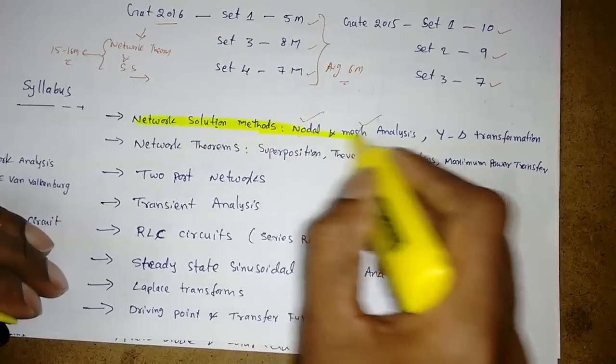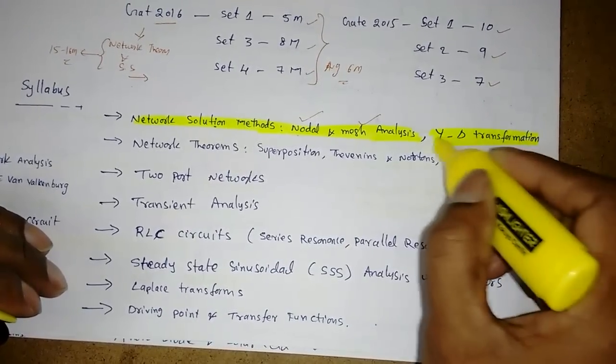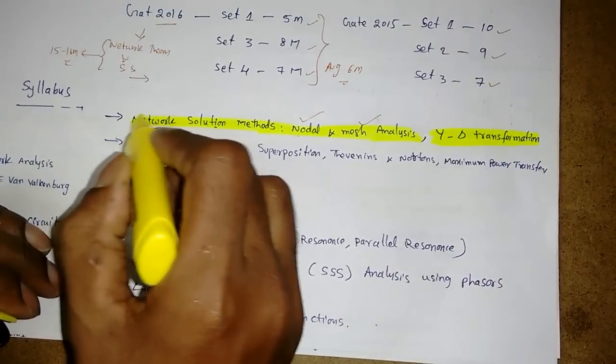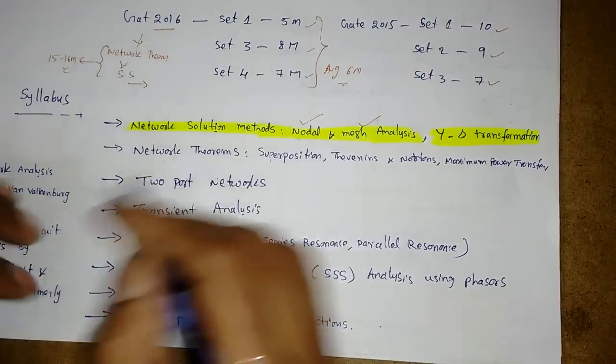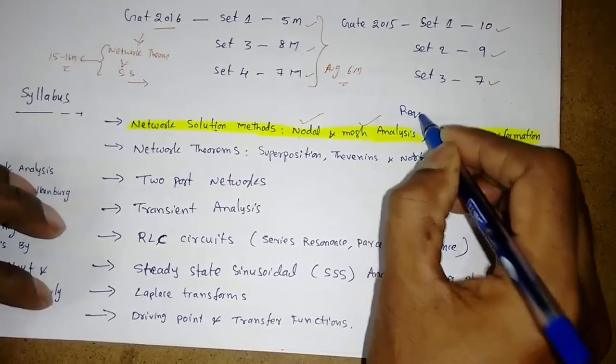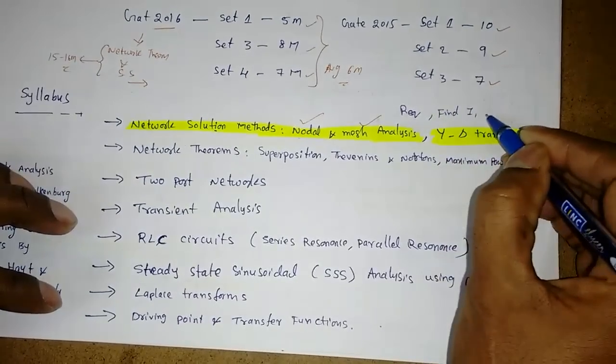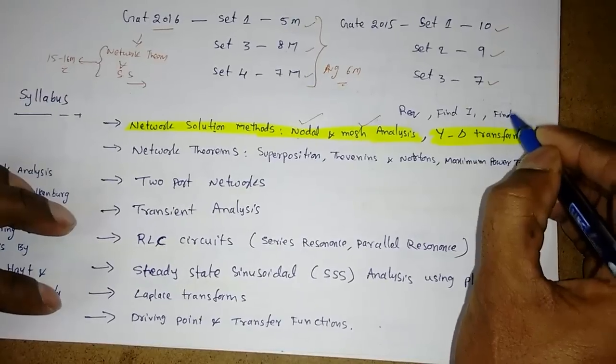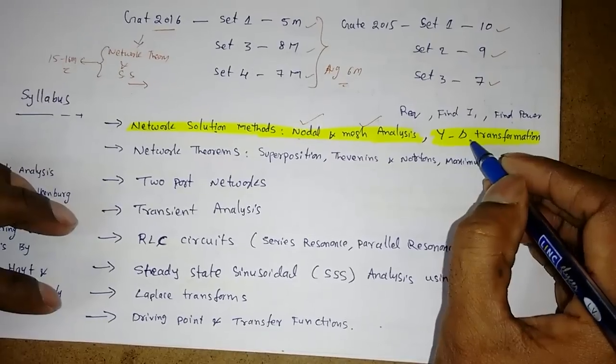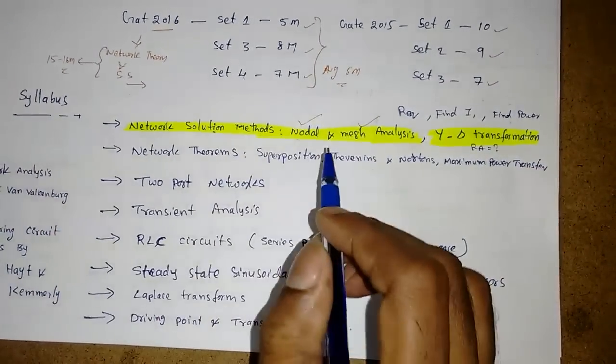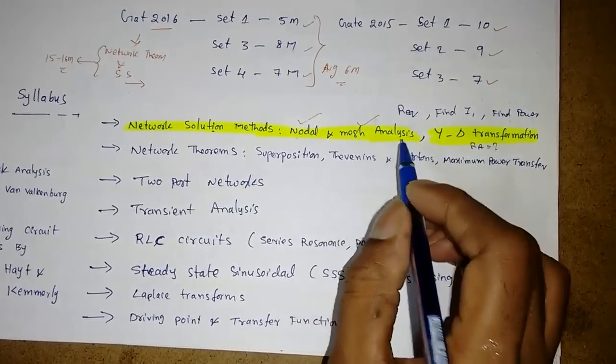My first topic should be node analysis, mesh analysis and finding the R equivalence or C equivalence or L equivalence. There is a question from this 100% sure. We may get find R equivalence between A and B points, or find I1 in some branch, or find power in some branch. There is a question from the network solution methods, the introduction of network theory subject.